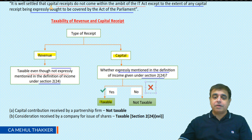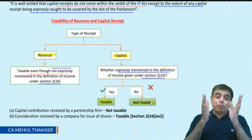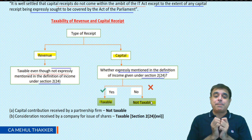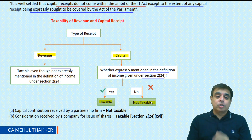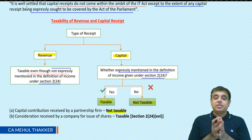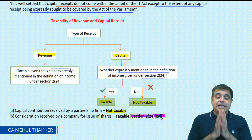Revenue receipts are taxable even though not expressly mentioned, but for capital receipts we have to check if they are expressly covered in the definition of income under section 2, clause 24. For example, capital contribution received by a partnership firm from its partners is not written in the definition, so it would not be taxable. However, consideration received by a company for issue of shares is covered under section 2, clause 24, sub-clause 16.